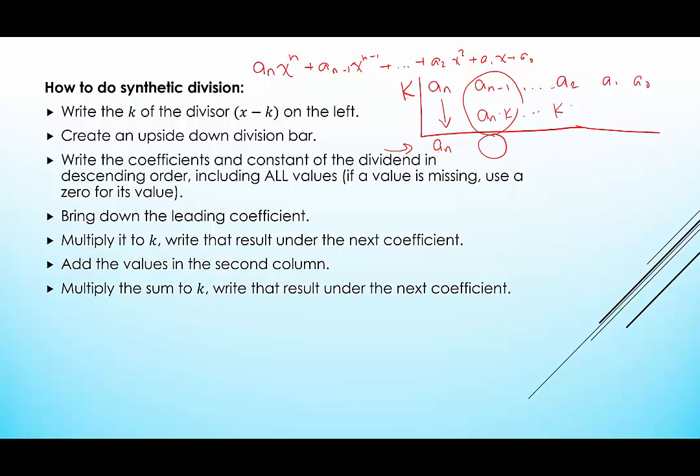Now we're going to take that sum and multiply it to k, and write that underneath the next coefficient. Then we would add these, and we would take this result and multiply it by k. We would add these. So we just keep bringing down, multiplying, putting here, adding.